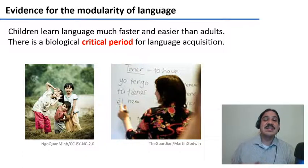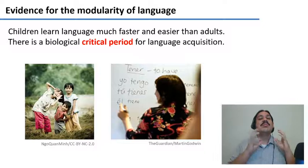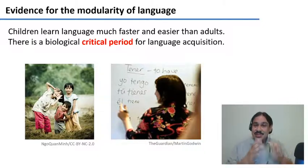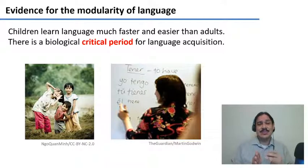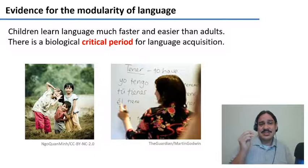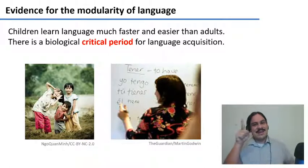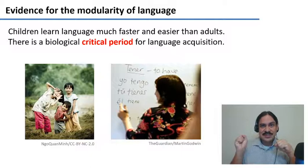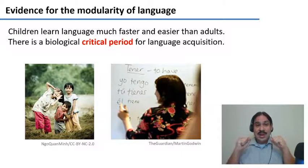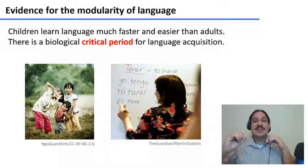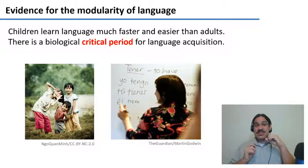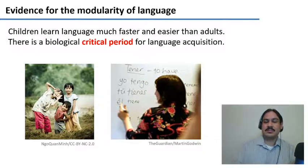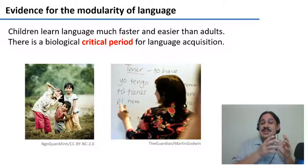Another bit of evidence that there might be something special to language is that there is something called a critical period for language learning. Children learn language incredibly easily and incredibly fast. If you put a one-year-old into a community, they're going to learn the language like it's nothing, and they're going to learn it perfectly. Whereas if you ask a 25-year-old to learn a language, it's going to be really hard. There is a critical period when we're very young where it's easy for us to learn languages, and then that changes. This has to do with our biology, with being younger or older, and it is not a function of intelligence. No matter how smart you are, it's going to be difficult to learn languages when you're an adult, and for every child it's incredibly easy to learn languages when they are small. So there's something different about learning languages when compared to other skills.